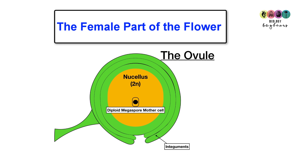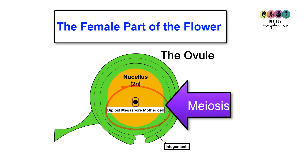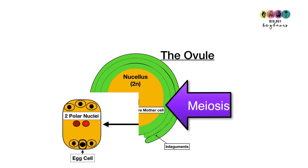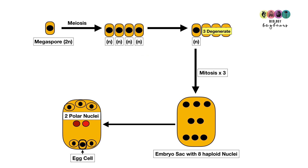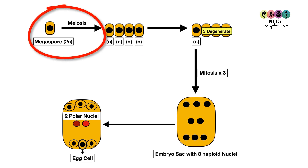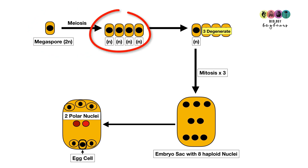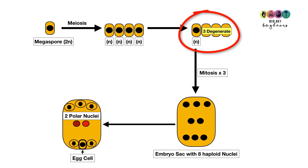The whole process of forming those female gametes begins with the diploid megaspore mother cell. It divides by meiosis to produce four haploid cells. Three of them die off or degenerate, leaving one remaining haploid cell, which is the embryo sac.